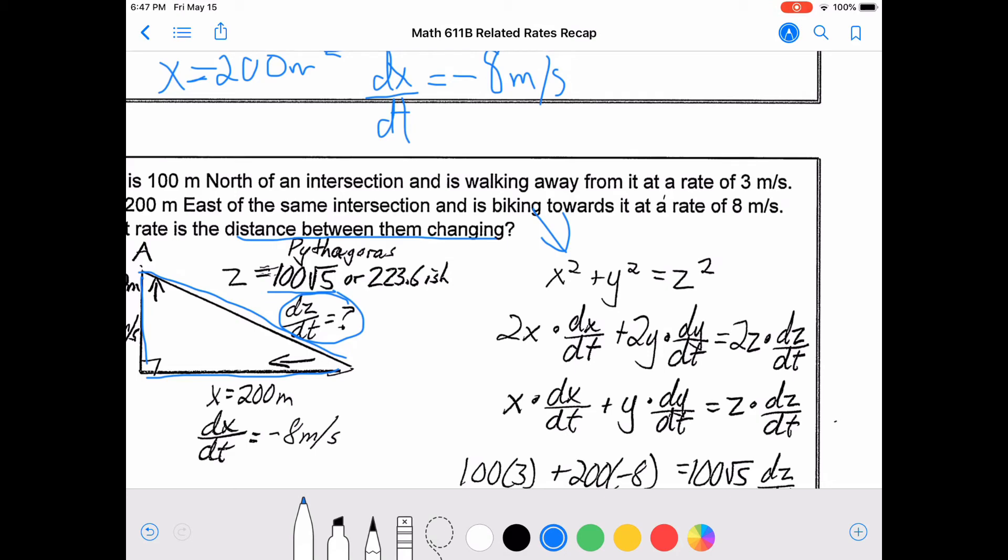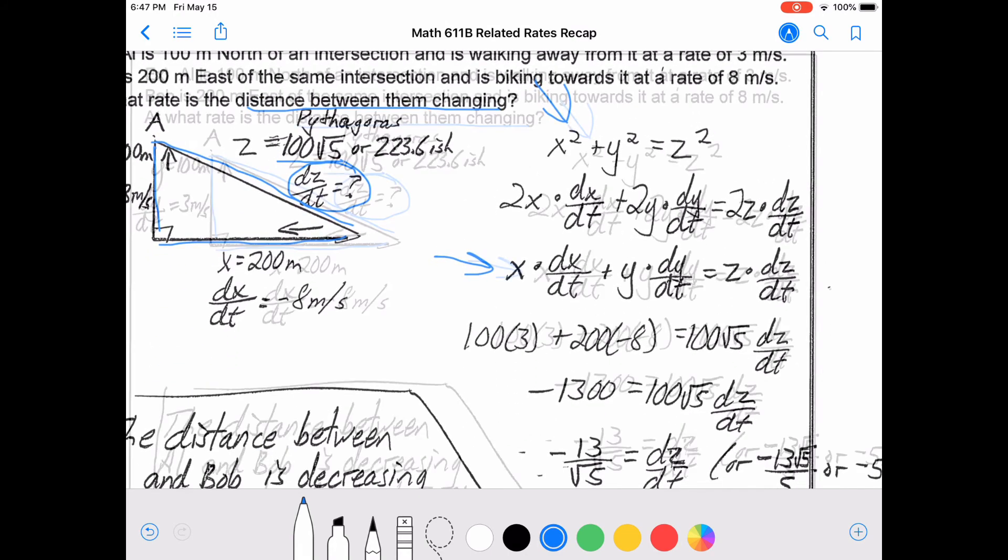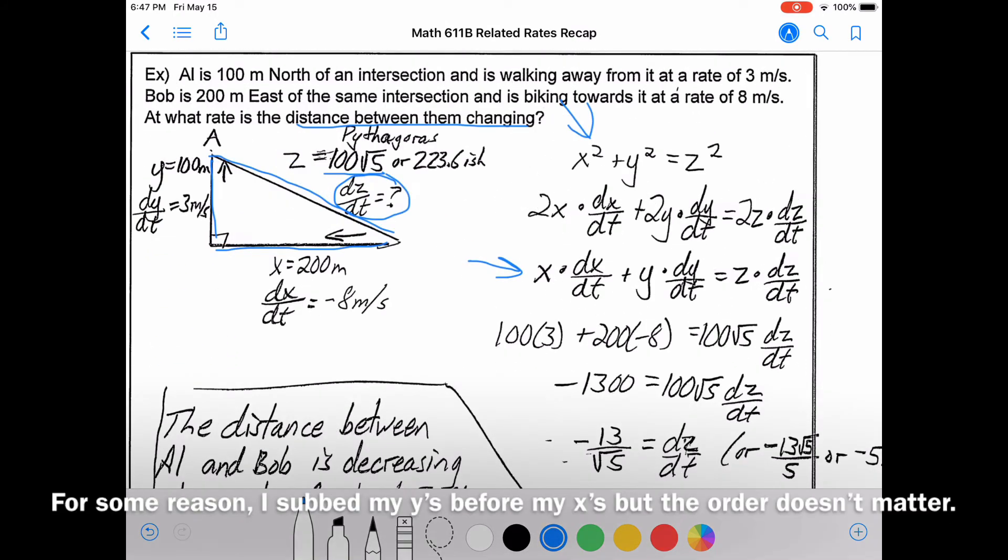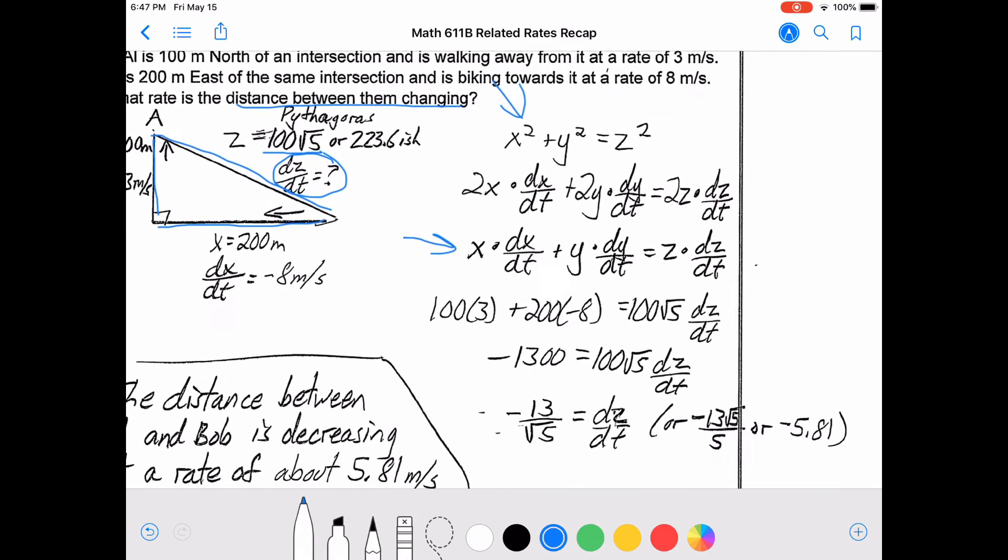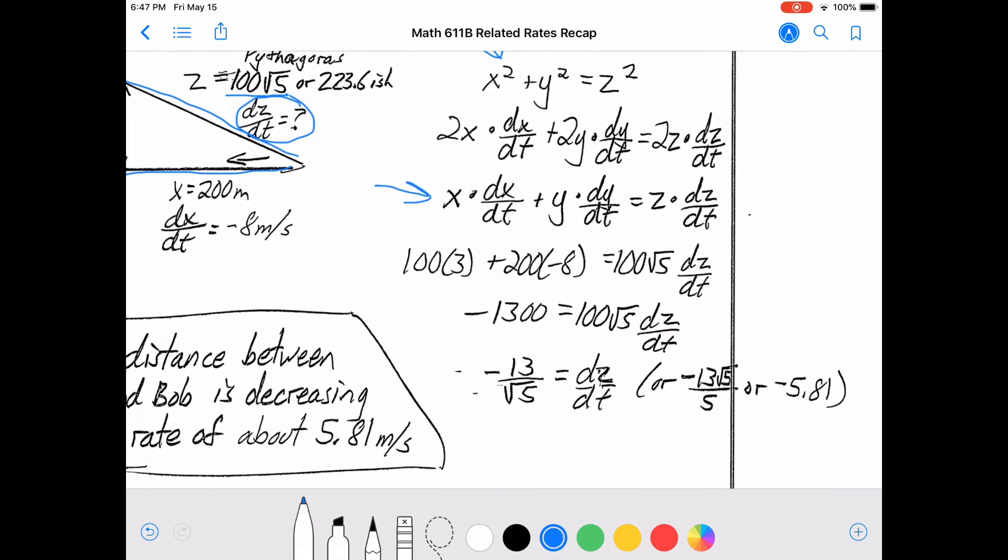I decided to divide everything by 2 in this step, just that my numbers were smaller, and then I sub in. I put in 100 for y, 3 for dy by dt, 200 for x, negative 8 for dx by dt, and then 100 root 5 for z. I sub it, and I get dz by dt is negative 13 over root 5, or about negative 5.1.